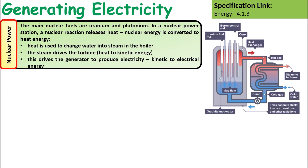In nuclear power stations, the main nuclear fuels are uranium and plutonium. A reaction converts the stored energy in the nuclear bonds between atoms into heat energy. This heat energy is then used to turn water into steam, which drives a turbine, which in turn drives a generator to produce electricity.